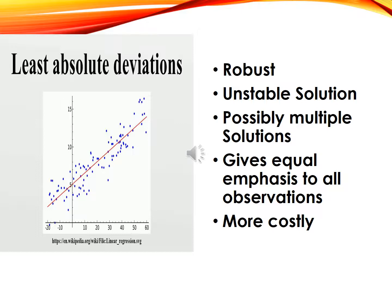In ordinary least squares, you always get one solution, but least absolute deviation regression may lead to multiple solutions. Compared to the ordinary least squares method, the least absolute deviation technique is computationally more costly.